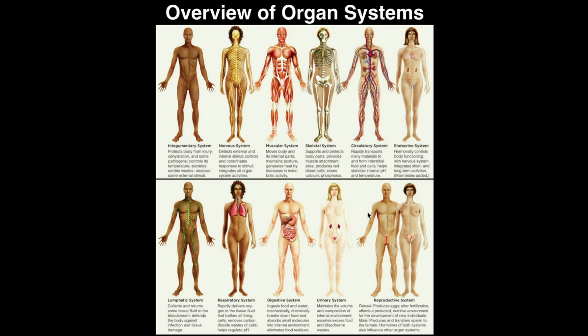The male reproductive system is going to produce hormones and sperm cells for their half of reproduction. The female reproductive system is going to produce eggs and hormones such as estradiol, a type of estrogen, for their half of reproduction. Hormones produced from these areas can also trigger secondary sex characteristics.